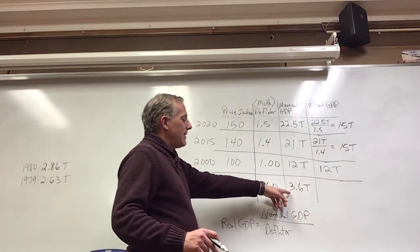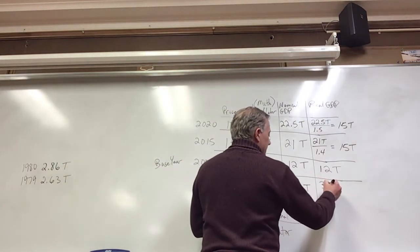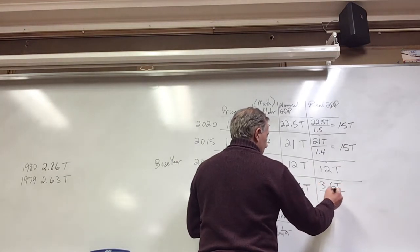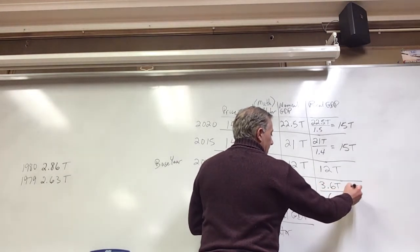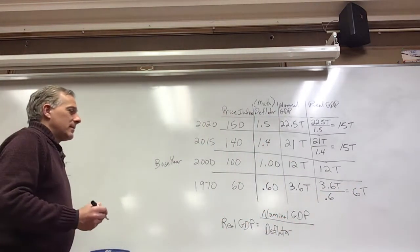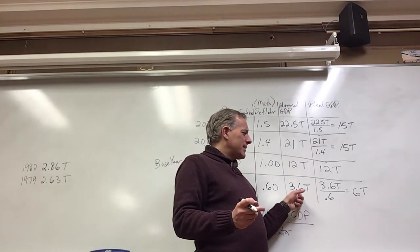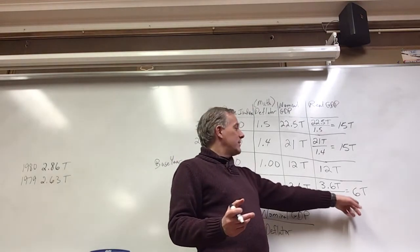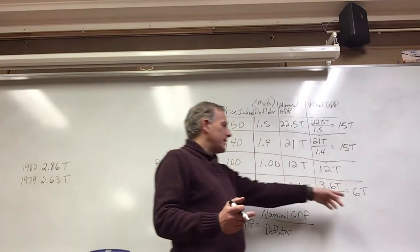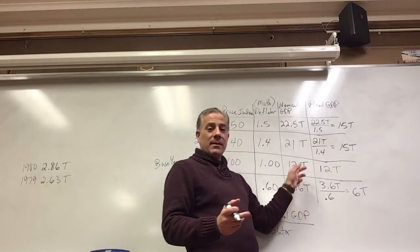But here it's going to be a deflator—I'm sorry, an inflator. 3.6 divided by 0.6 is going to give me 6 trillion. So this 3.6, and when we compare it to the year 2000, it's still less, but 6 trillion is much closer to 12 trillion than 3.6 trillion.